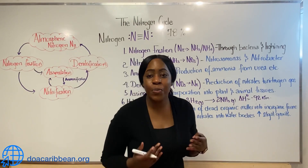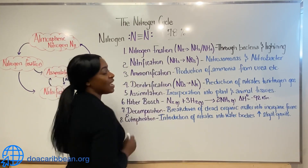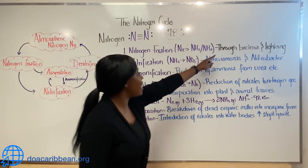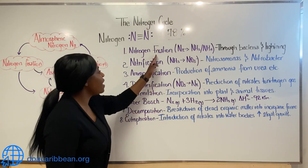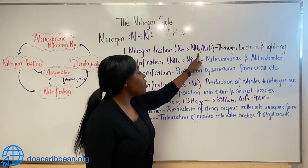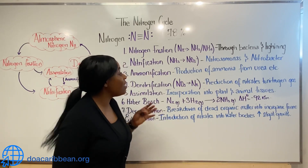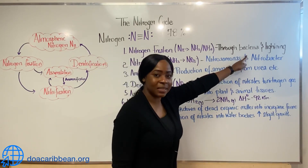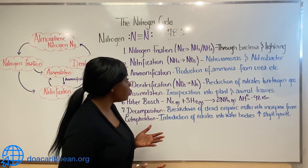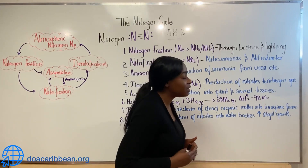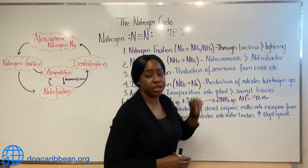unfortunately, it is unusable to many living things. And this brings us to the first process of the nitrogen cycle: nitrogen fixation. It is through nitrogen fixation that the unusable nitrogen in its elemental form is fixed into usable forms like ammonium compounds. Nitrogen fixation is achieved by the action of nitrogen-fixing bacteria like Rhizobium, found in leguminous plant roots, or free-living cyanobacteria, which convert atmospheric nitrogen into other nitrogenous compounds.